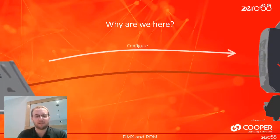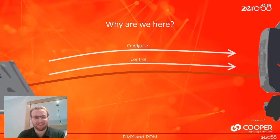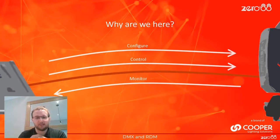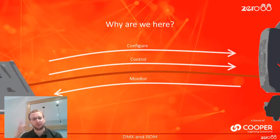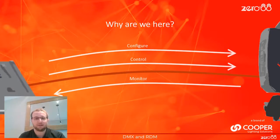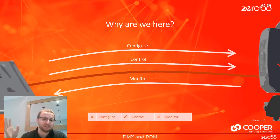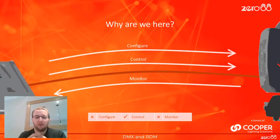Down this cable, I'd argue there are three things we want to be able to do: configure our lights, control our lights, and monitor our lights. If we can do all three, we're in a really good position. We'll look at how to do all three using DMX and RDM today. Next week there's a follow-on session about Ethernet protocols — Artnet, Streaming ACN, RDMnet and so on.